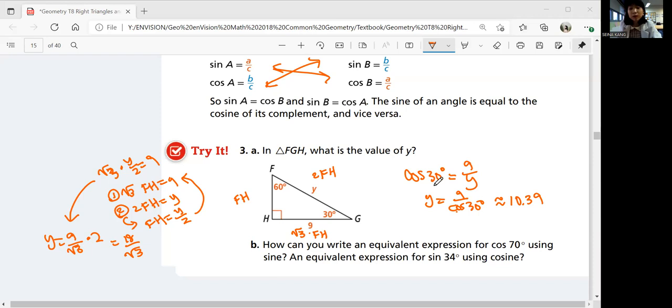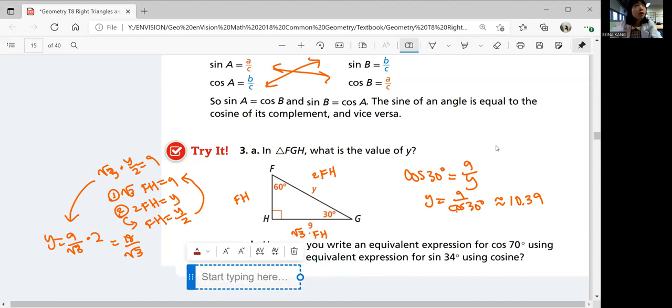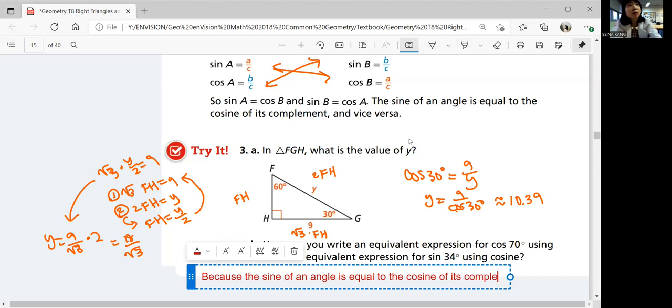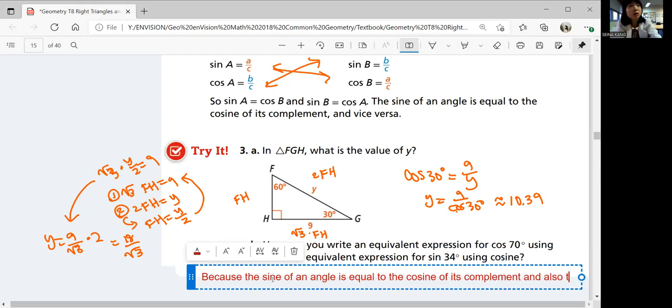We're going to write down using the strategy of using the complementary angle, right? So you know that because the sine of an angle is equal to the cosine of its complement and vice versa, and also the other way around.